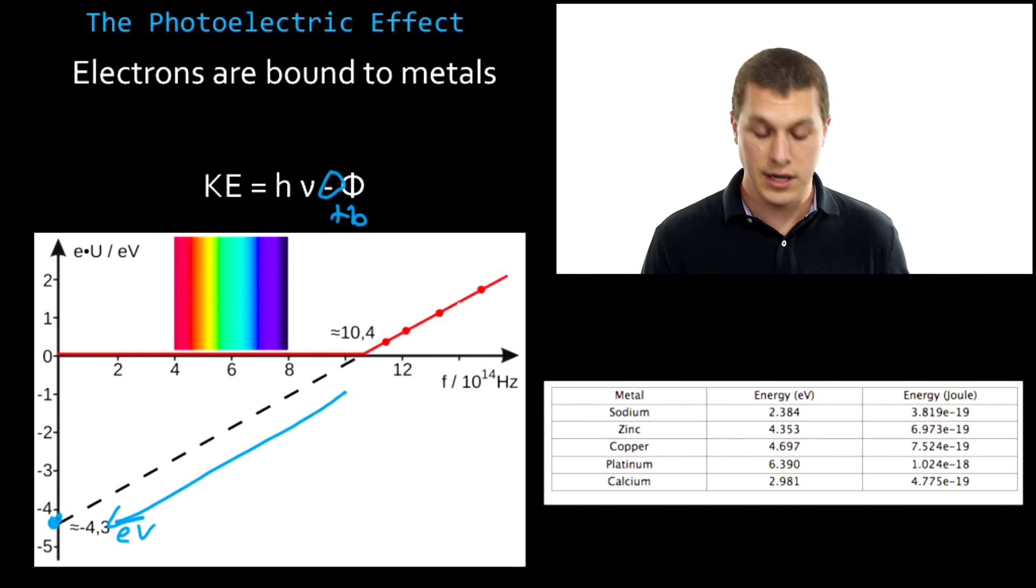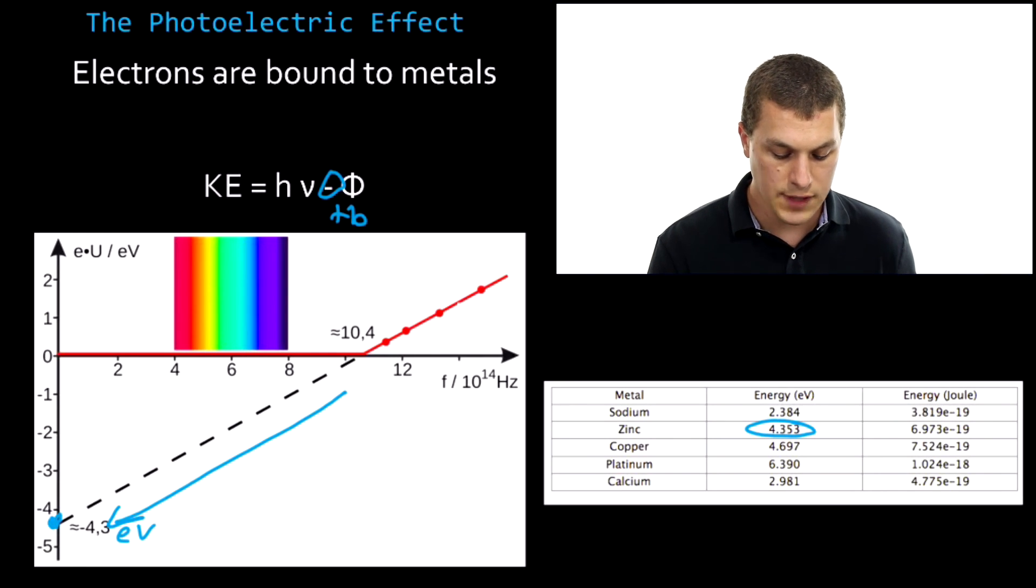And so if I come over to a chart here that shows us all the different metals we have, then you can actually identify what we have. And if we look through this chart, we'll see that zinc has a binding energy of about 4.3 electron volts. So this turns out to be the photoelectric effect for zinc.